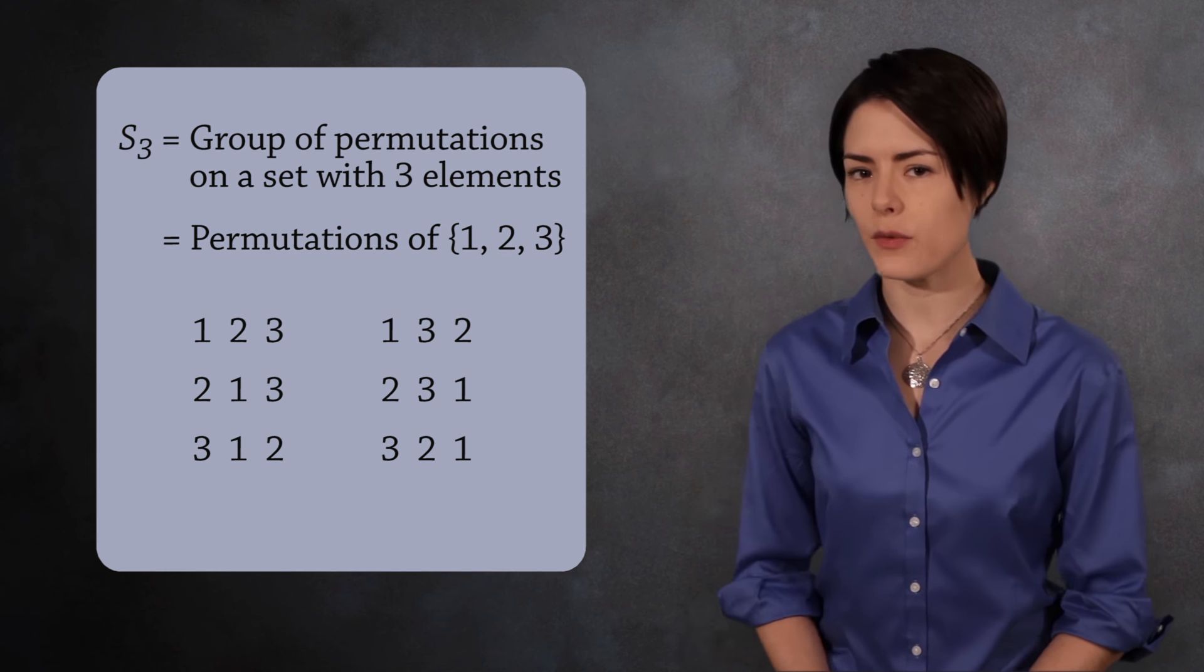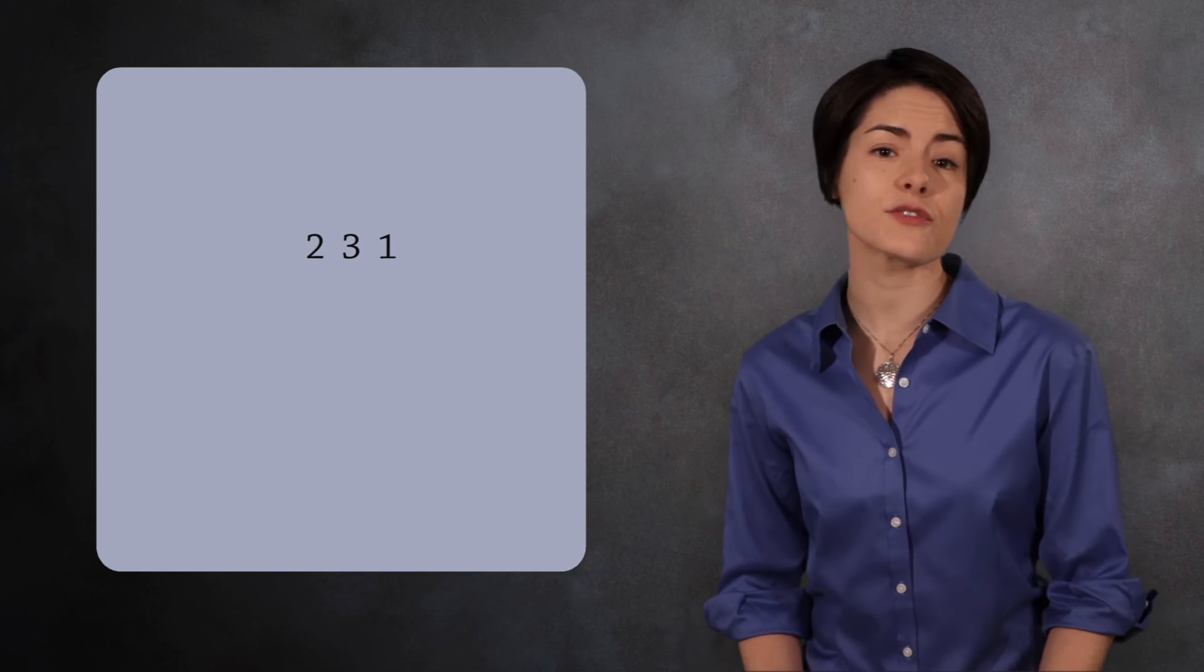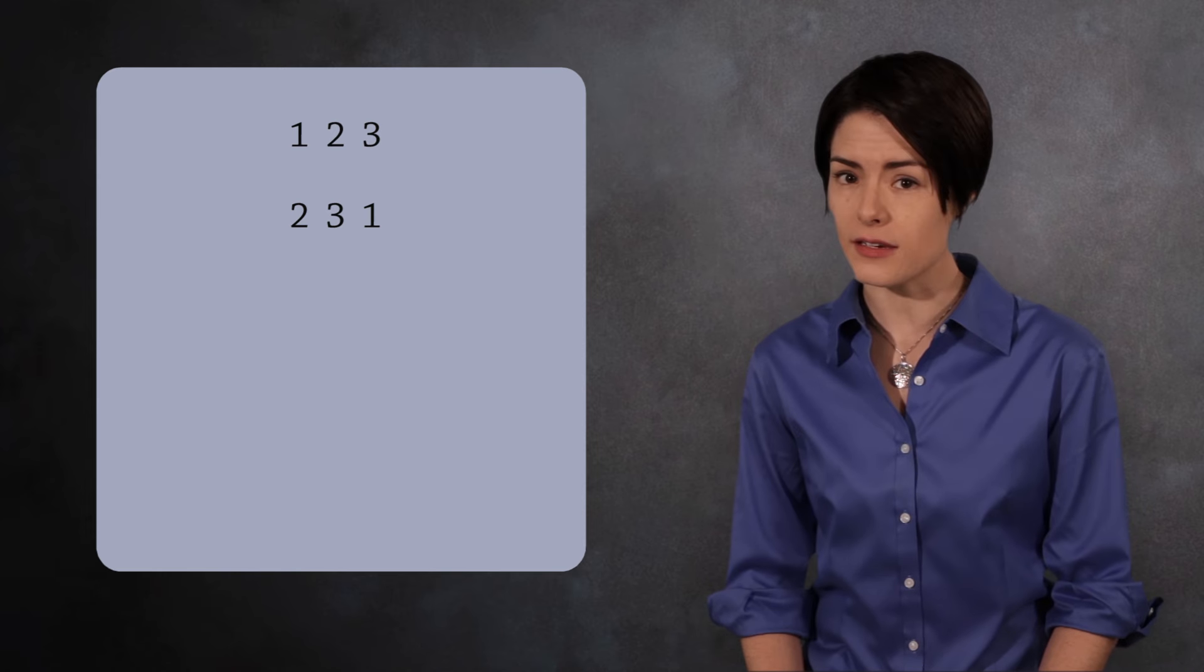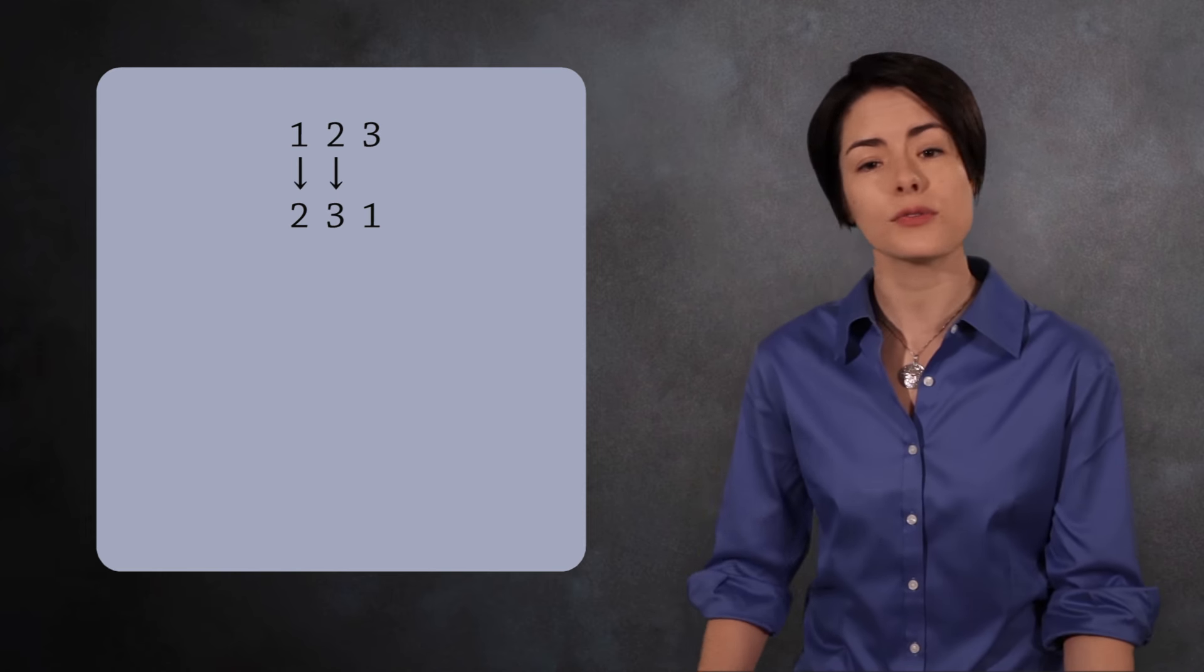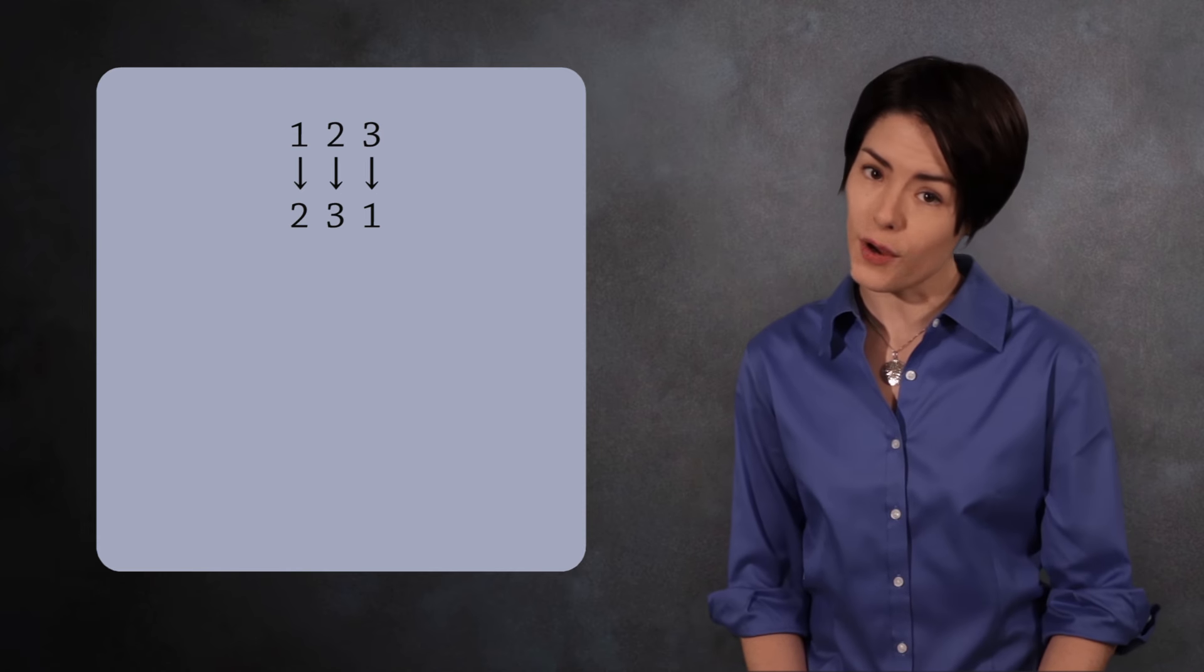Consider the permutation 2, 3, 1. This permutation takes 1, 2, 3 and replaces it with 2, 3, 1. 1 is replaced with 2, 2 is replaced with 3, and 3 is replaced with 1.